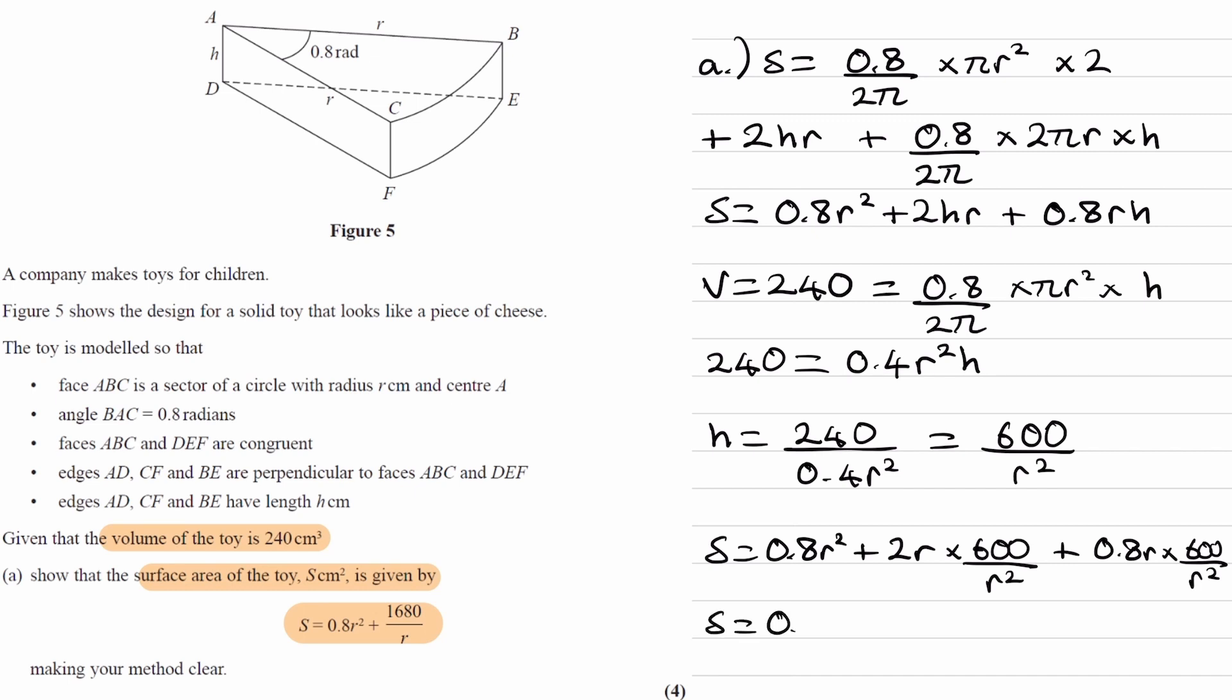Okay, we can simplify. First term just stays as it is. Second term, the r's will partially cancel, we'll get 1200 over r. And final term, 0.8 times 600 gives us 480, again over r.